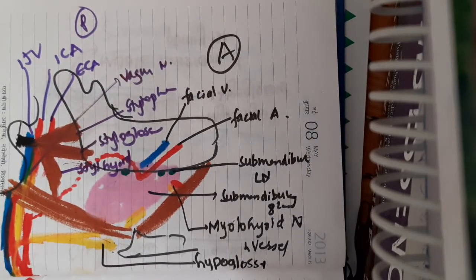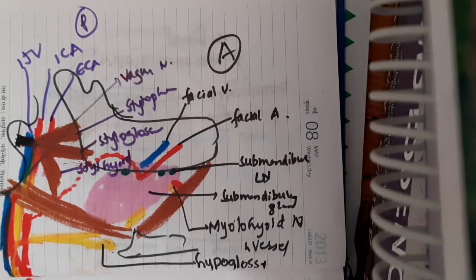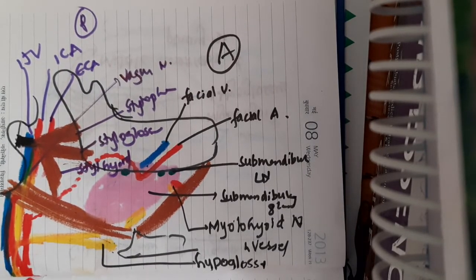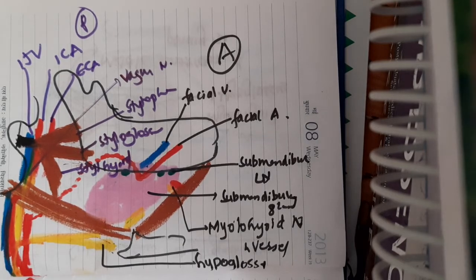These are the contents of the posterior part of the triangle, and those are the contents of the anterior part of the triangle. This concludes the lecture on the digastric triangle. Thank you for watching.